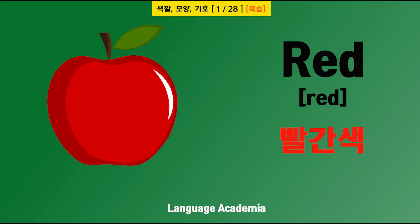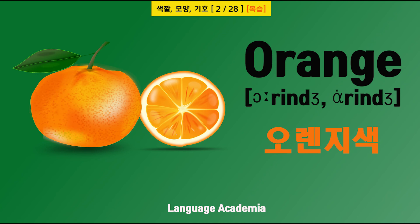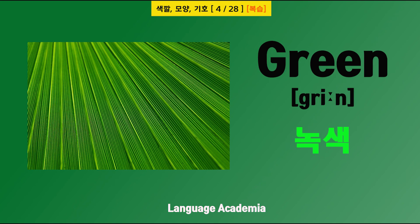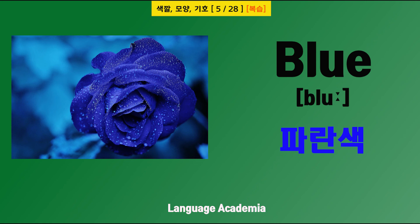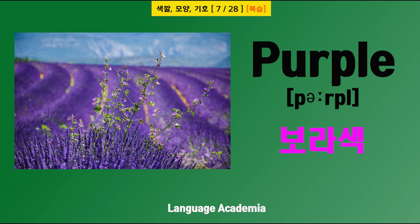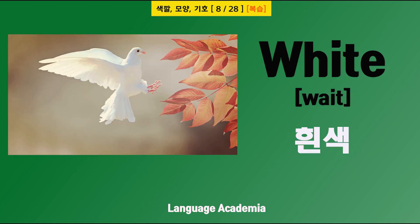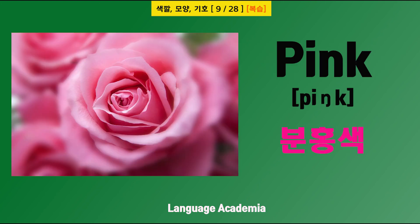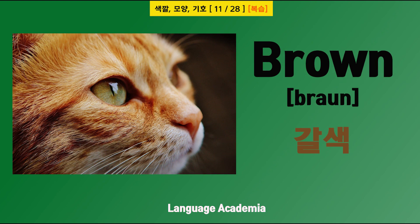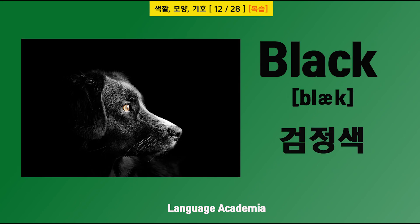Red, 빨간색. Orange. Yellow, 노란색. Green, 녹색. Blue, 파란색. Indigo, 남색. Purple, 보라색. White, 흰색. Pink, 분홍색. Gray, 회색. Brown, 갈색. Black, 검정색.